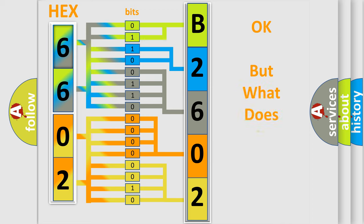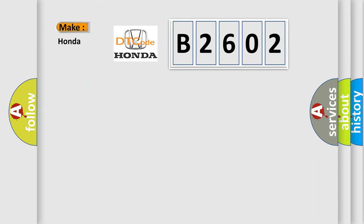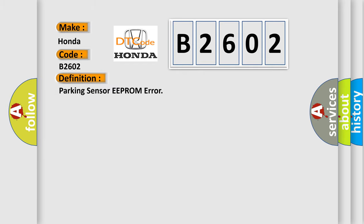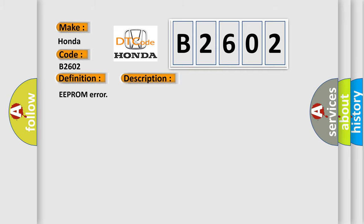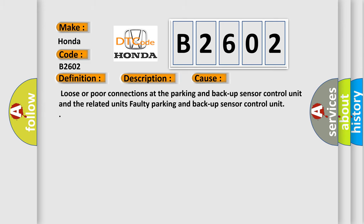We now know how the diagnostic tool translates received information into a more comprehensible format. The number itself does not make sense unless we can assign information about what it actually expresses. So, what does diagnostic trouble code B2602 interpret specifically? For Honda, the basic definition is: Parking Sensor EEPROM Error. This diagnostic error occurs most often due to loose or poor connections at the parking and backup sensor control unit, or a faulty parking and backup sensor control unit.